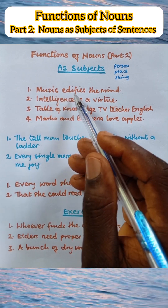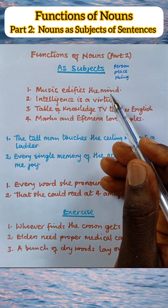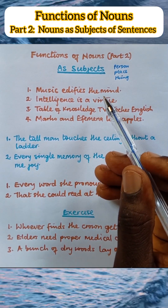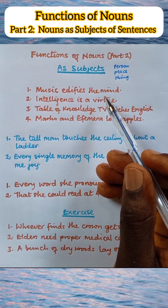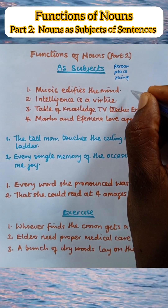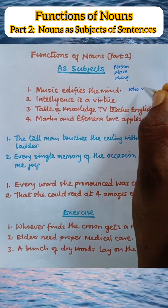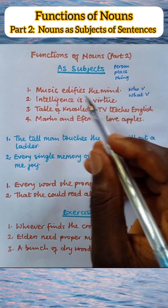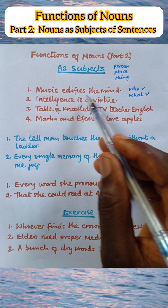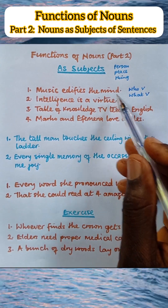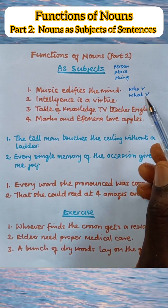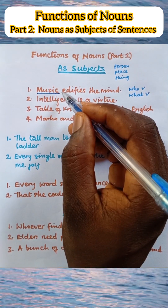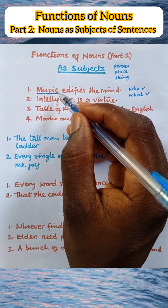Sentence 1: 'Music edifies the mind.' To identify the subject of a sentence, the first thing to do is to identify the verb. Once you identify the verb, you ask the question: who [verb]? or what [verb]? In this sentence, the verb is 'edifies,' so we ask, 'What edifies?' The answer is 'music.' Music is the subject of this sentence, and as such, music is a noun.